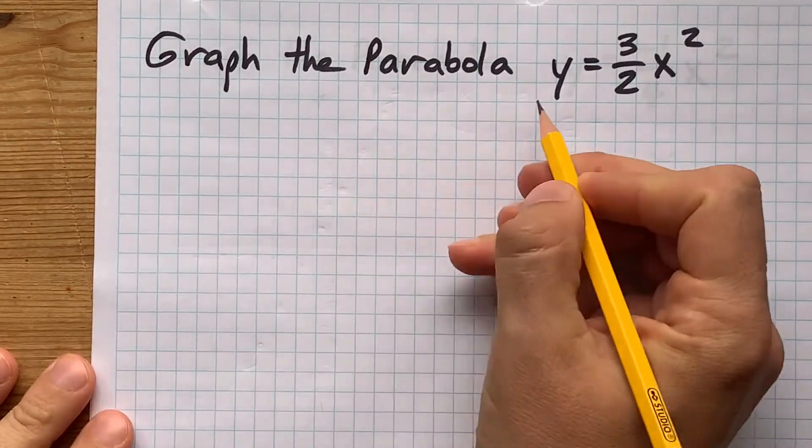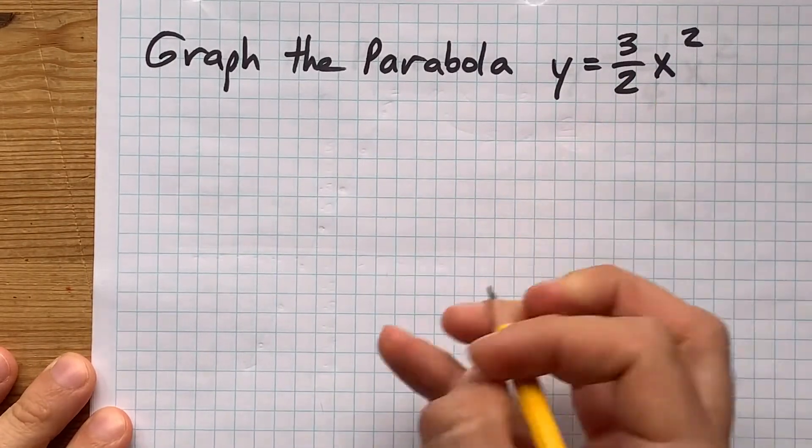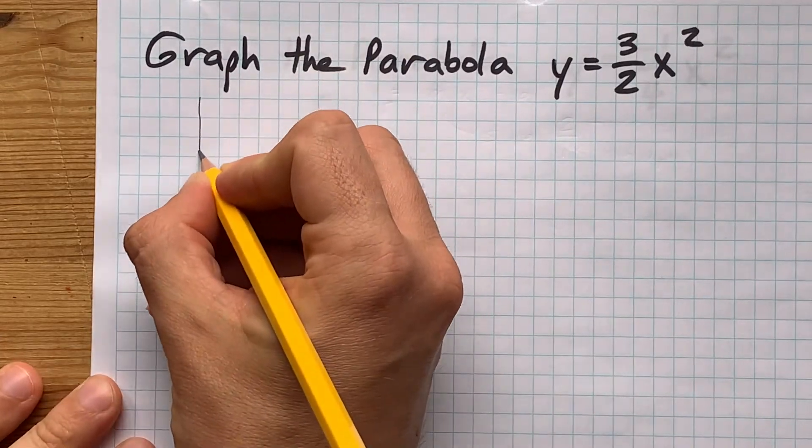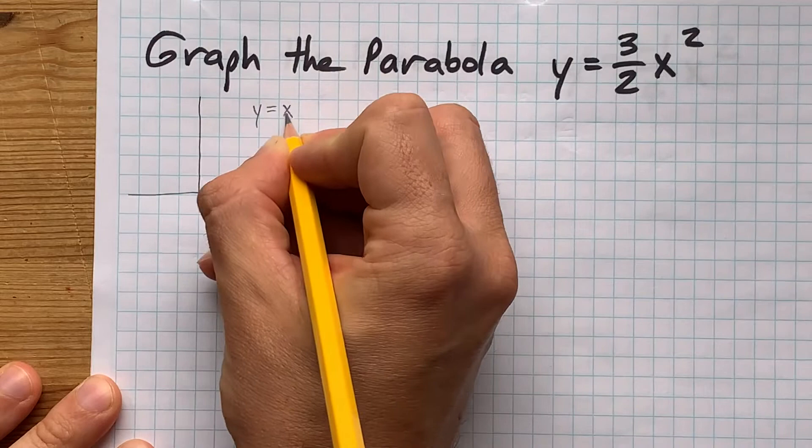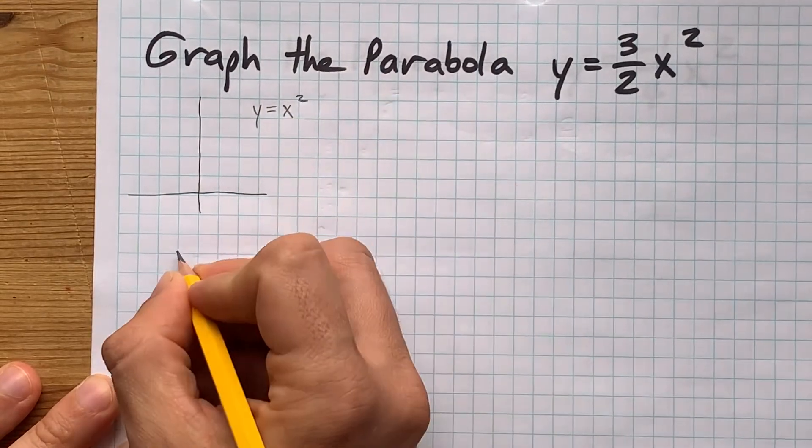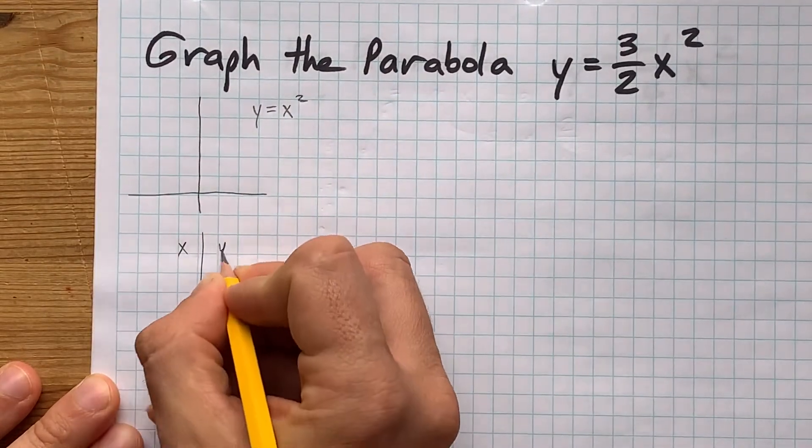How do you graph the parabola y equals 3 halves x squared? Well, you either need to know what the base curve y equals x squared looks like, or you need to know what its table of values is.